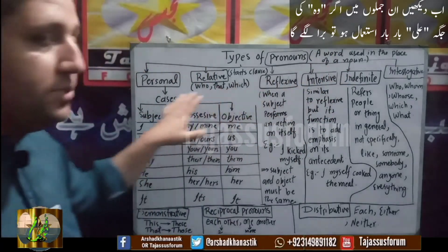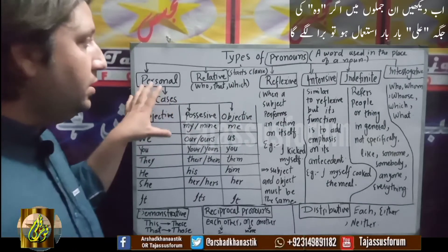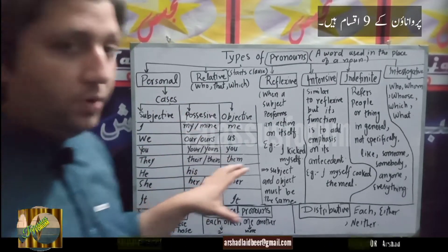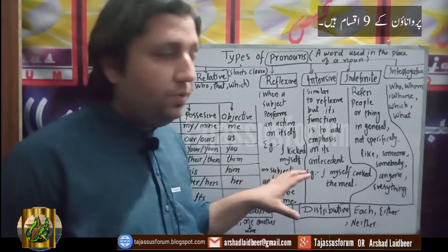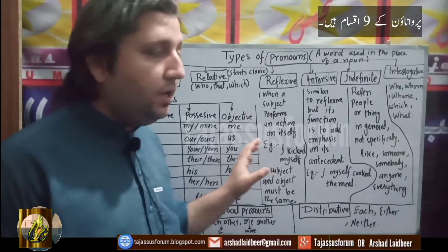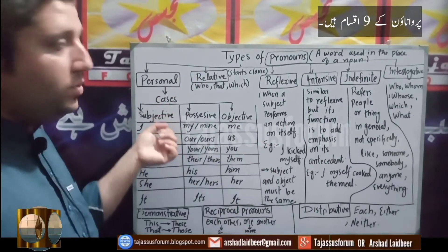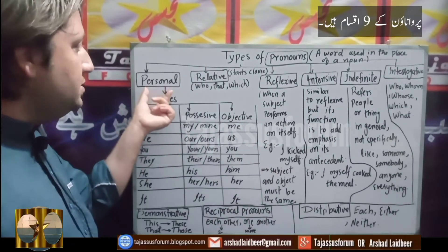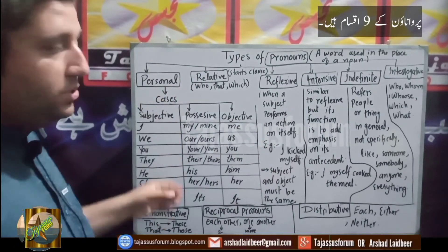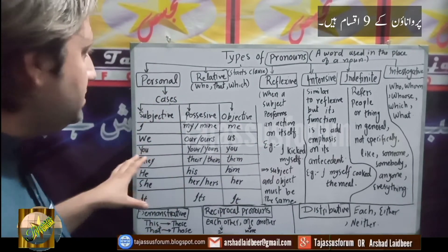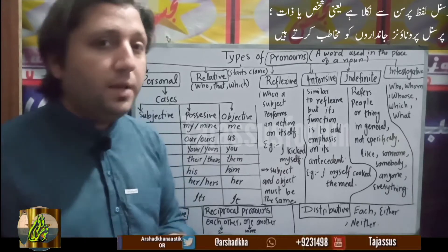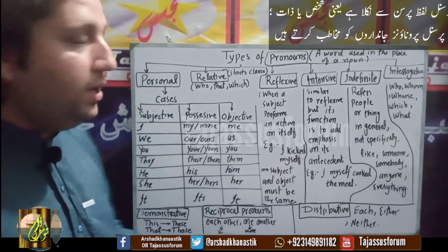Now coming towards the types of pronoun. There are basically nine kinds of pronouns. We will discuss them one by one. The first kind of pronoun is personal pronoun. Personal pronoun means the pronouns that are used to describe a person.